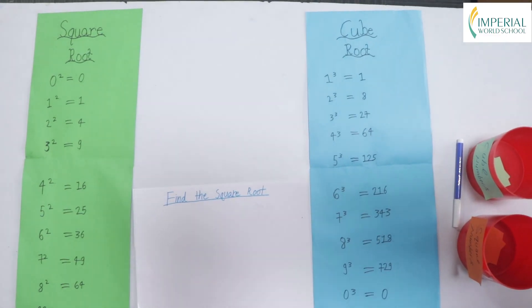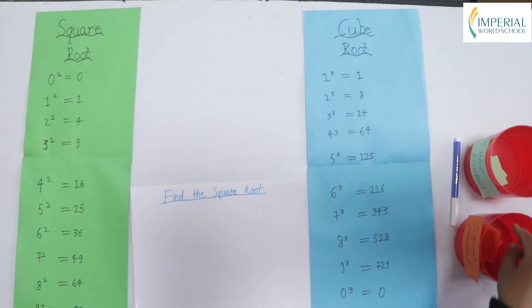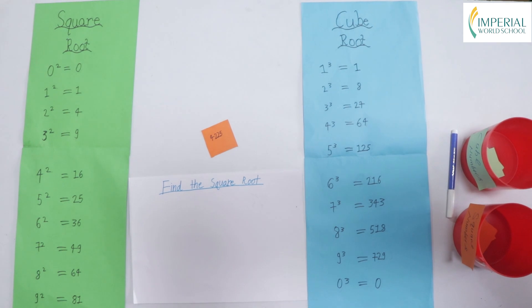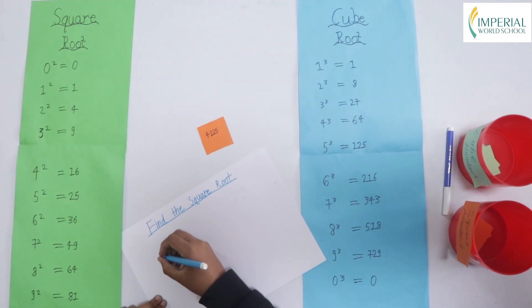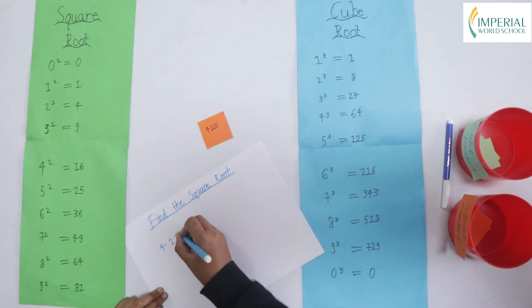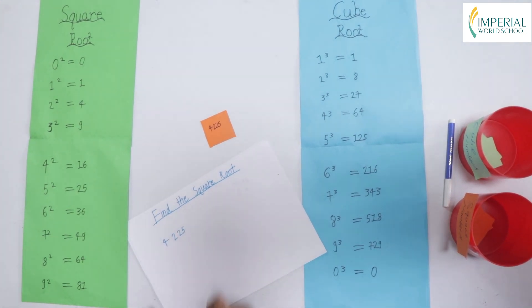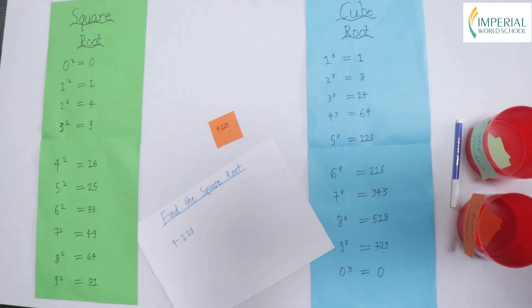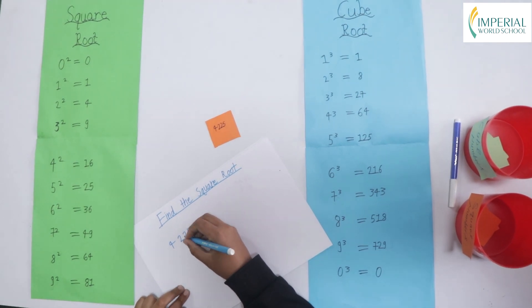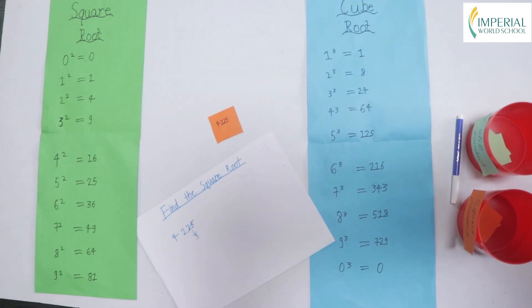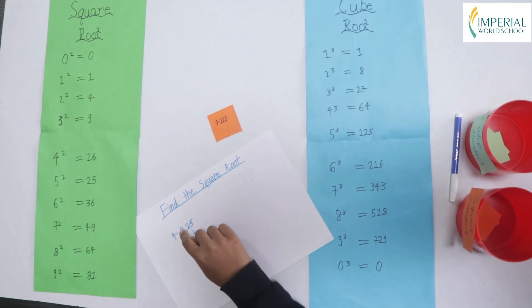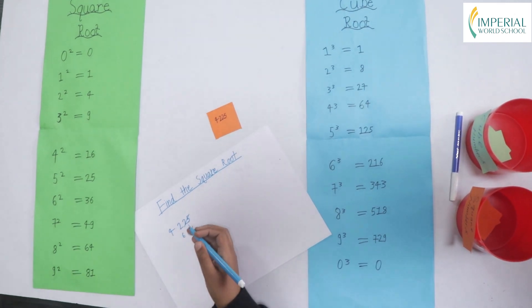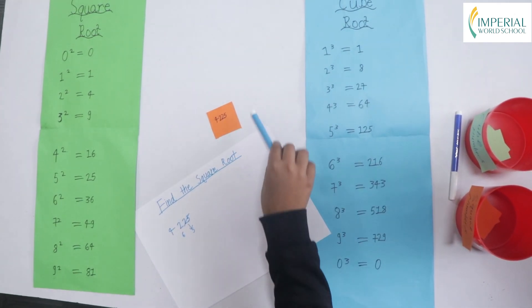So now let's find the square number from this ball. So we got 4225. Now to find the square root of 4225, first we have to write. Now we have to look at the last number which will be 5. Which number is equal to 5 over here? Of course it is 5. So we now write 5 over here and cut the last two digits. Now which number is equal to 42 without crossing it? Which will be 6. So now we write 6 here and this is the square root of 4225.